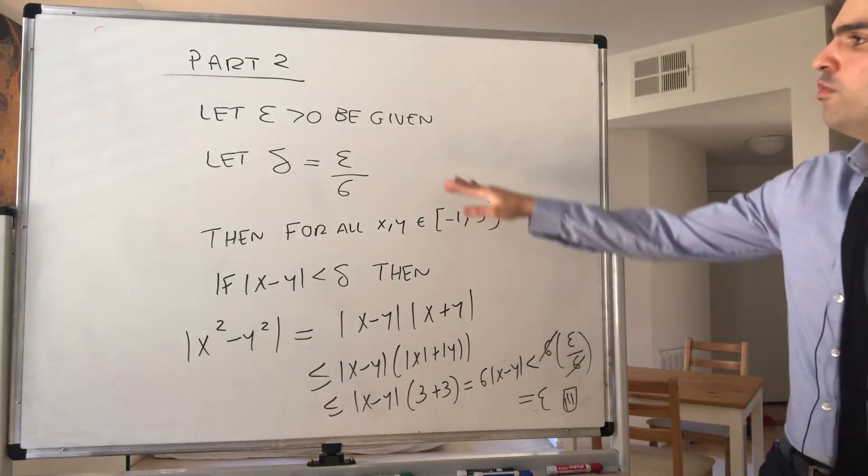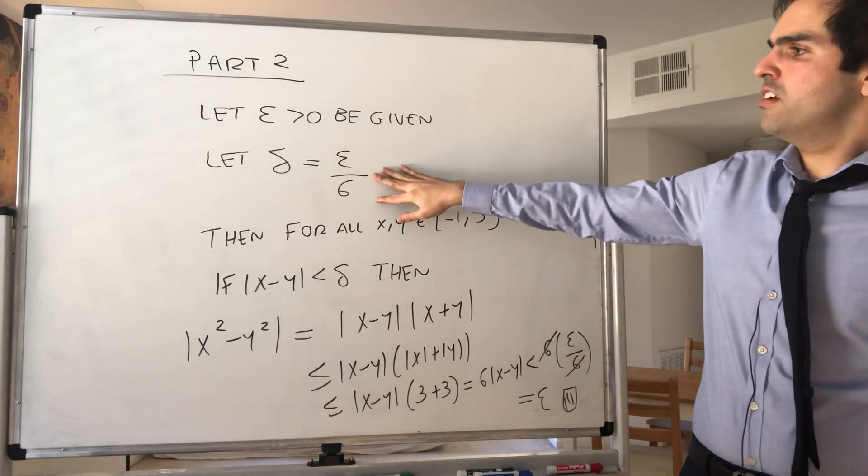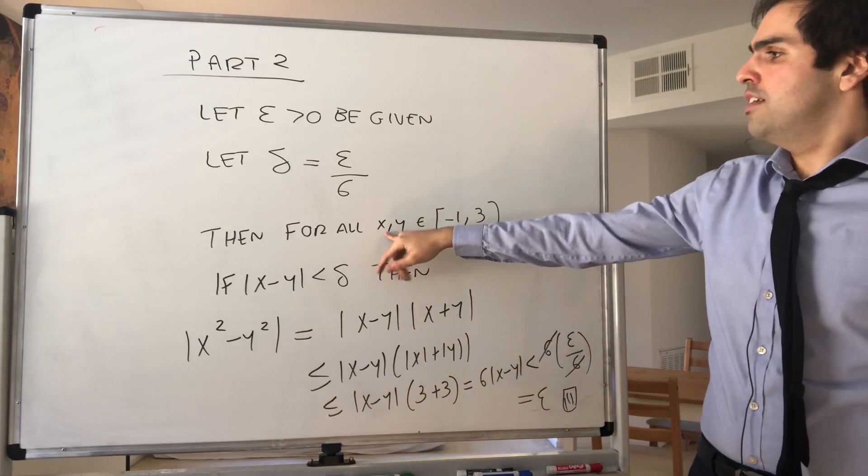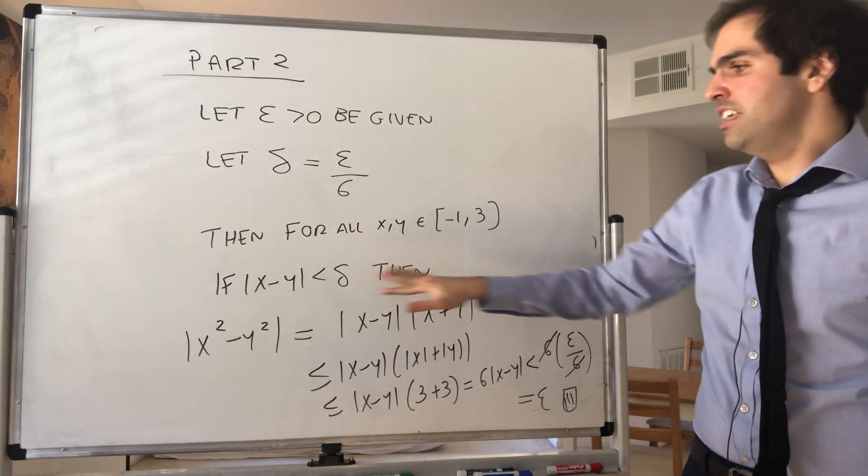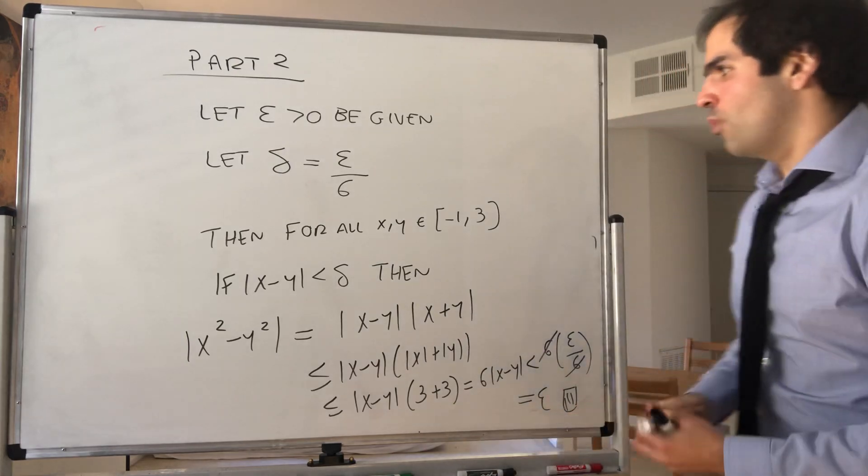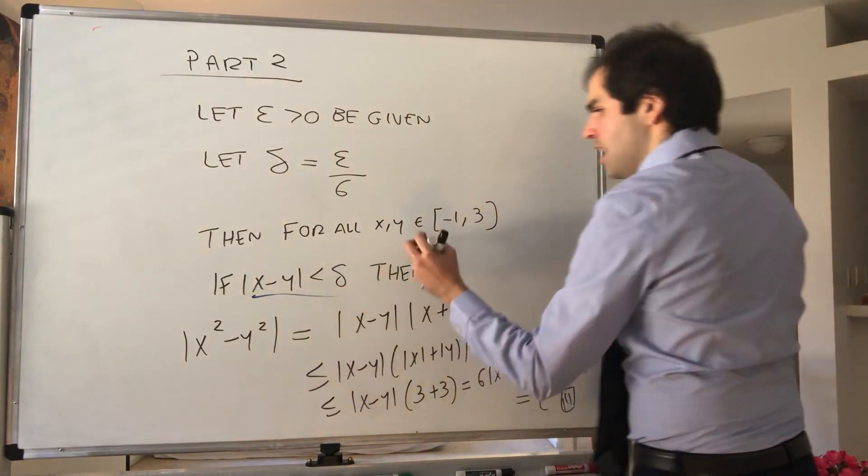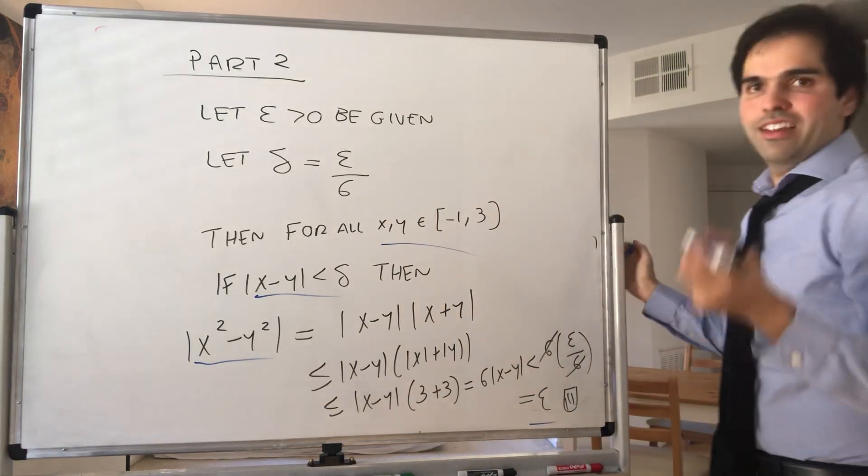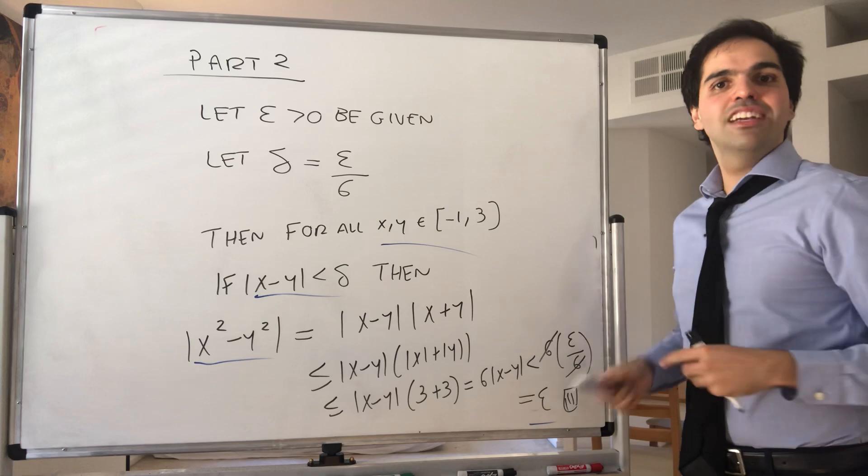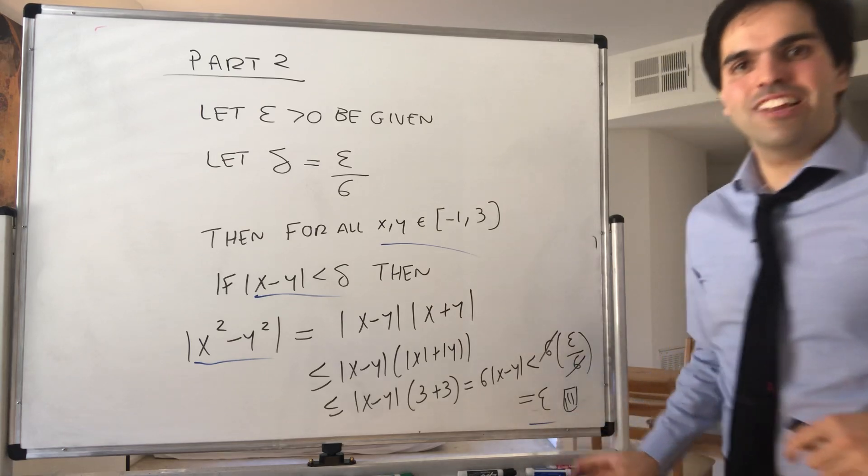And therefore, we're done. We've given ε. We found a δ, a universal δ, in fact, such that for all x and y in that interval, if |x - y| < δ, then |f(x) - f(y)| < ε. And therefore, we're done and we can stay home happy. All right. Thank you very much.